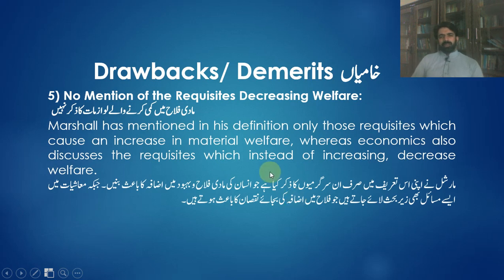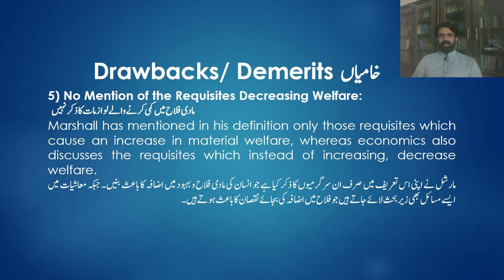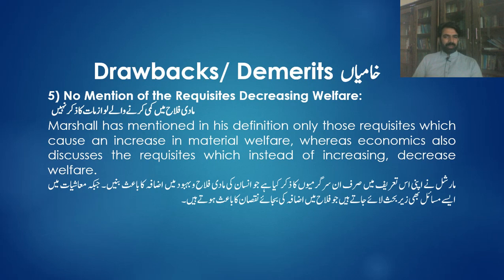پانچویں خامی: no mention of requisites decreasing welfare — Marshall نے اپنی definition میں صرف ان requisites کا ذکر کیا جو material welfare میں اضافہ کرتی ہیں، لیکن economics ان requisites کو بھی discuss کرتی ہے جو welfare کو بڑھانے کی بجائے کم کرتی ہیں۔ مثال کے طور پر defense کے اخراجات — ہم اسلحہ اس لیے خریدتے ہیں تاکہ ملک کی حفاظت ہو، لیکن جنگی سازوسامان جیسے میزائل اور ایٹم بم انسانیت کو نقصان پہنچاتے ہیں اور welfare میں اضافہ نہیں کرتے، تاہم یہ economic activities ضرور ہیں۔